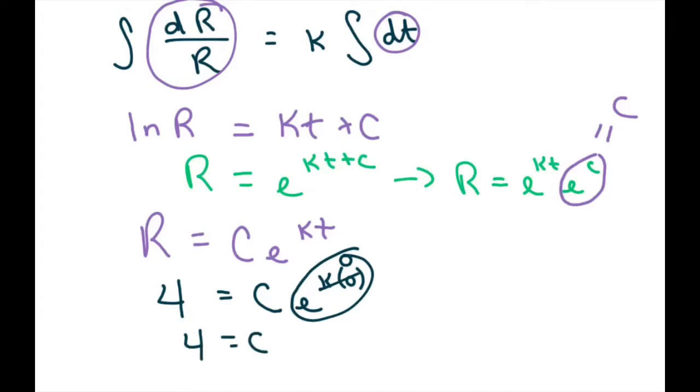So then we're going to solve for k. So let's just write this out. So we have r equals c is 4 e to the kt power. Now we're going to plug in the information that r is 10 when t is 2. So r is 10 when t is 2.